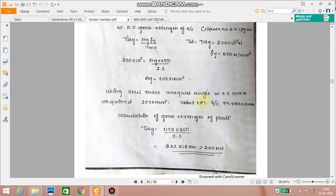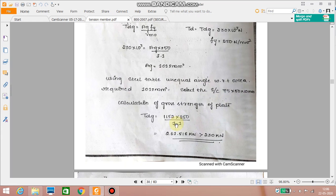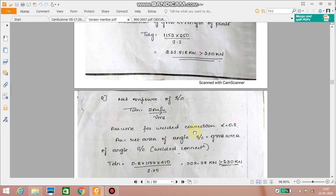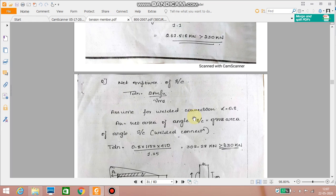We will go with section 75 by 50 by 10 mm. So for 75 by 50 by 10 mm, the area is 1152 millimeter square. Therefore Tdg equal to 1152 into 250 by 1.1. The strength comes out to be 261.818 kilonewton which is greater than 230 kilonewton. So the selected section is OK for time being.